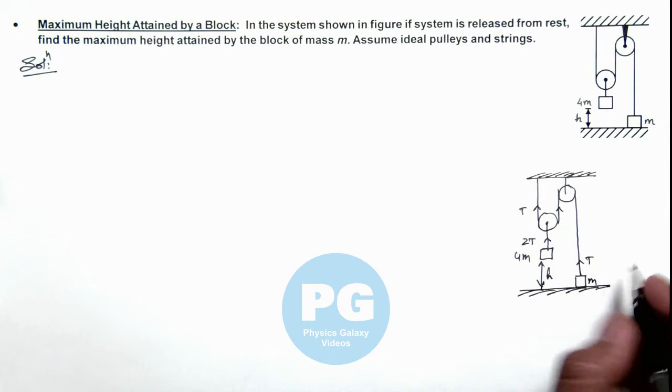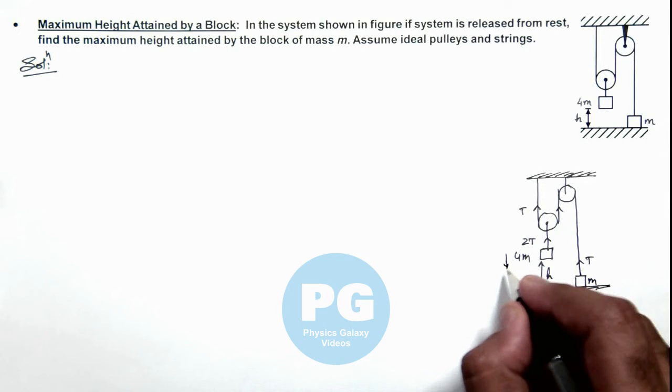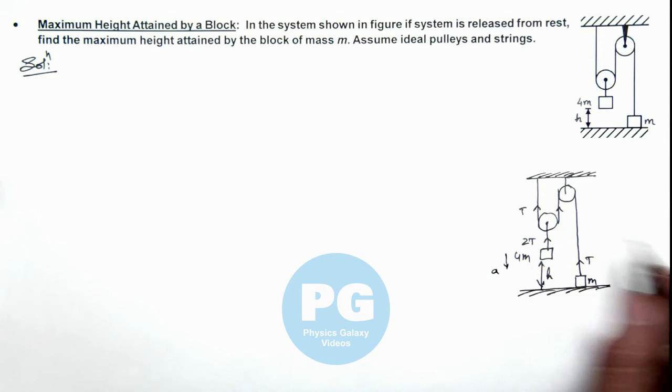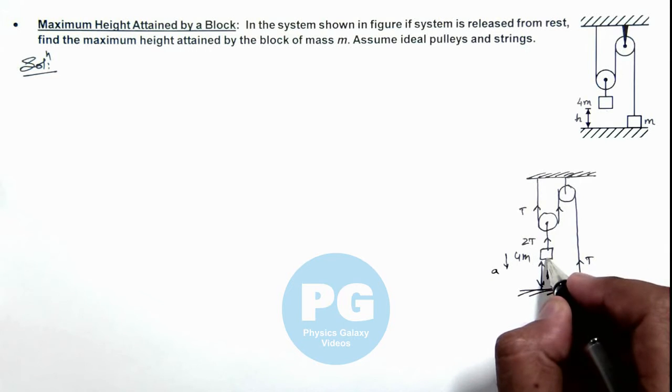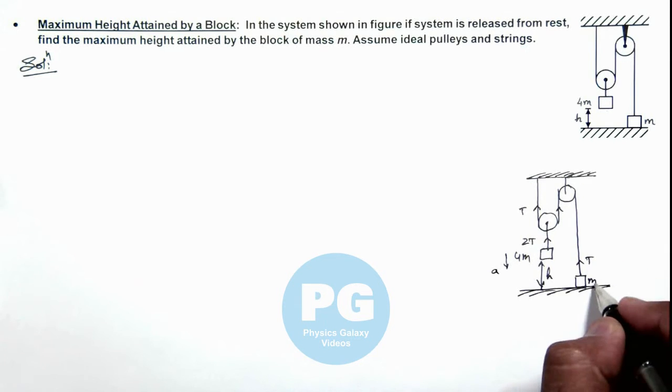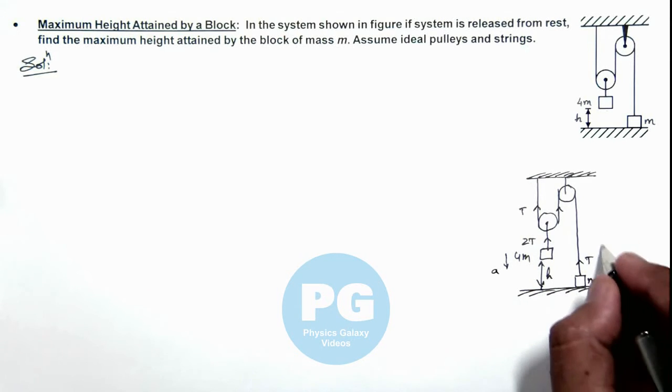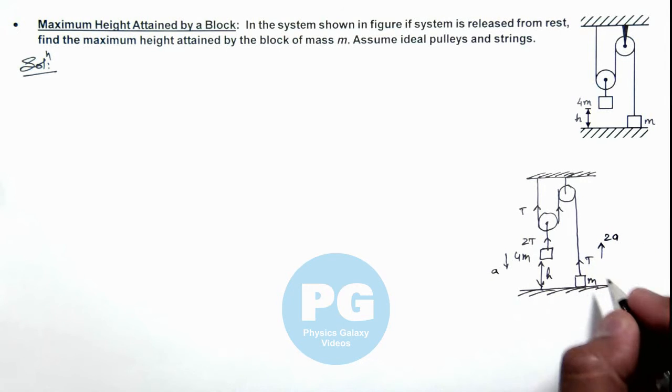In this situation when we release, if the 4m mass goes down at acceleration ay, we can see if it is pulled down by a distance x, this block will go up by 2x. So we can say it will be accelerating up with an acceleration 2ay.